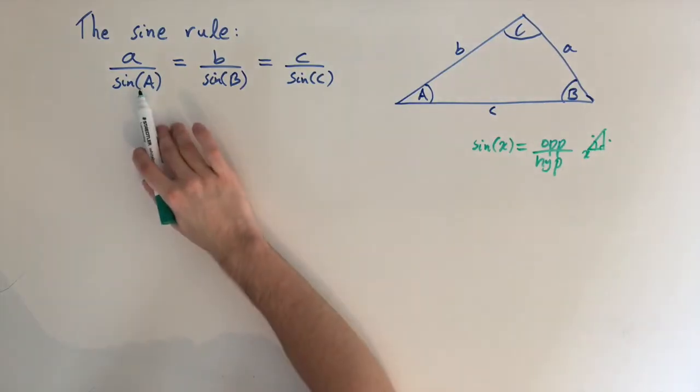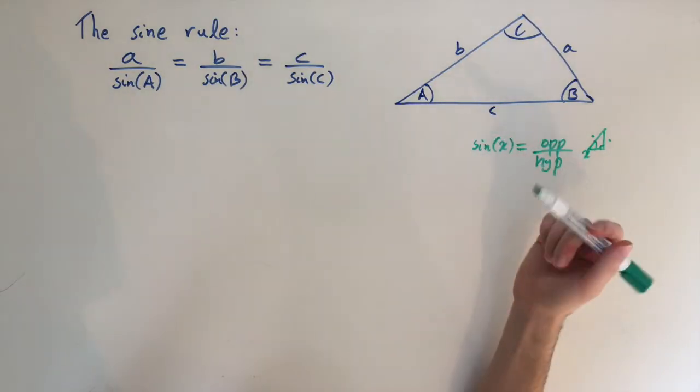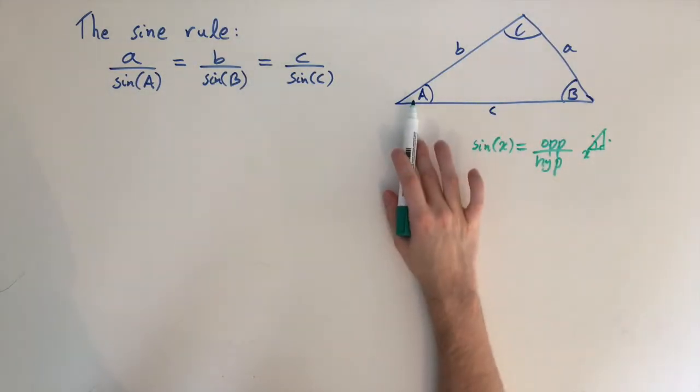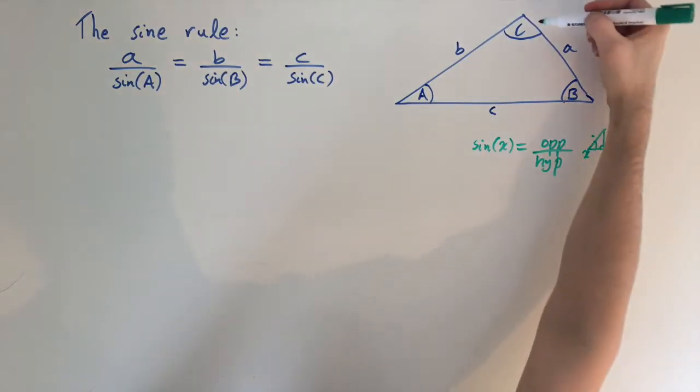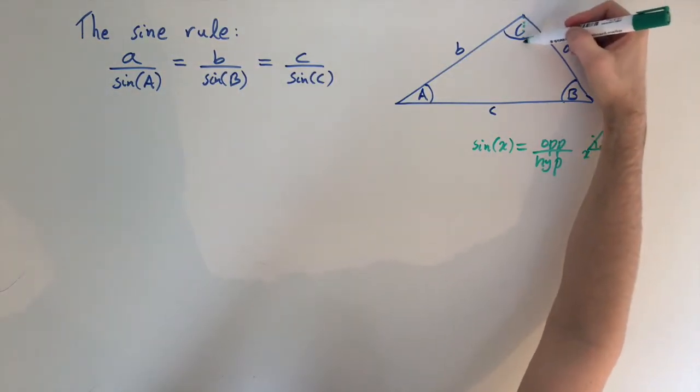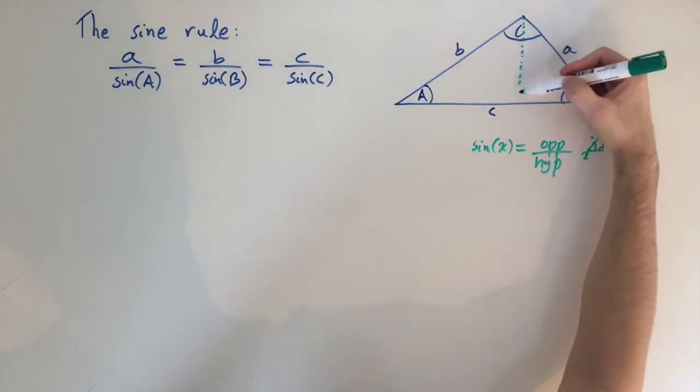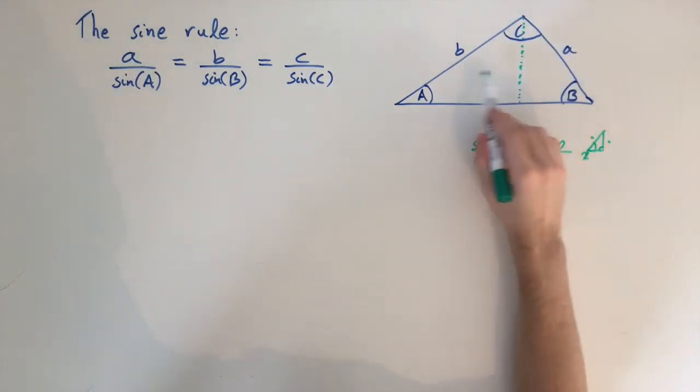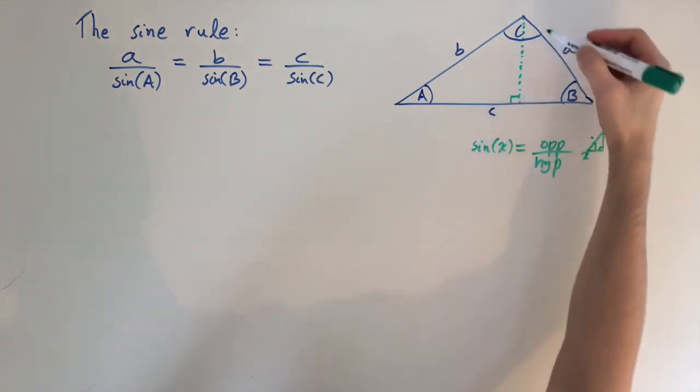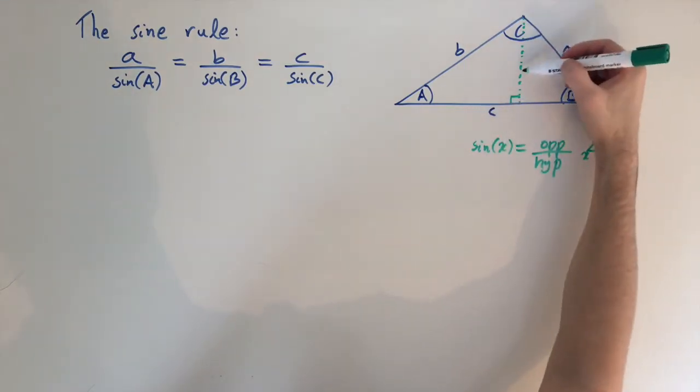So we want to find expressions for sine of a and sine of b, but to do that we need a right angle triangle. So we're going to use a little trick. We're going to drop down this line here, I'm going to draw this dotted line all the way down so we create two triangles, and these are both now right angle triangles. And I'm just going to label the length of this line h.